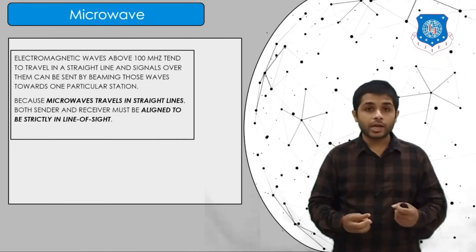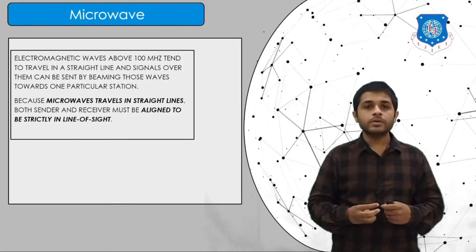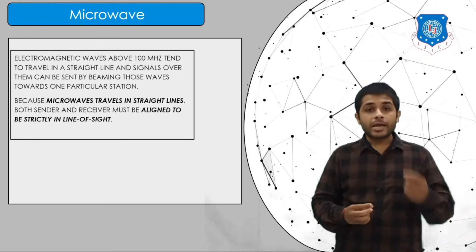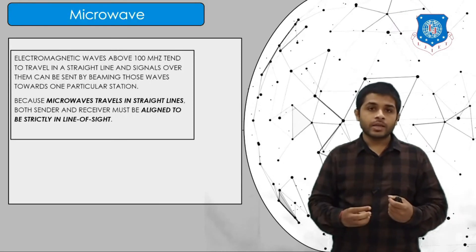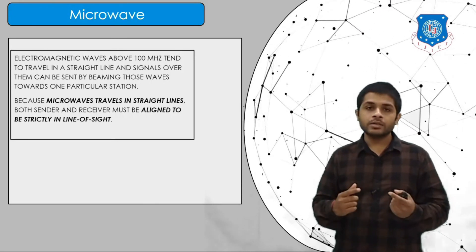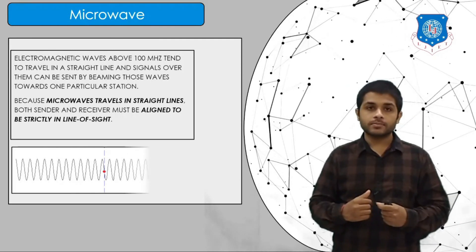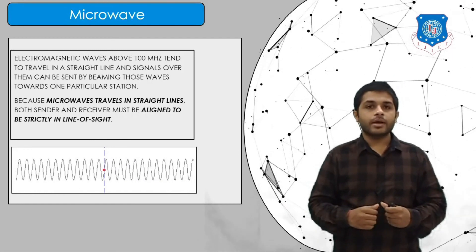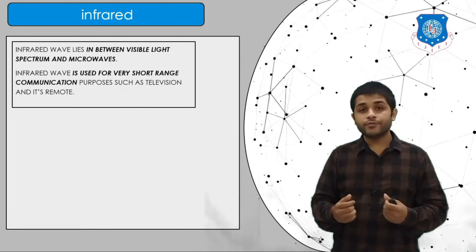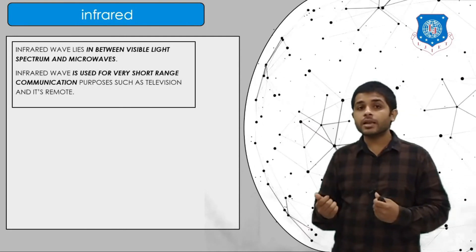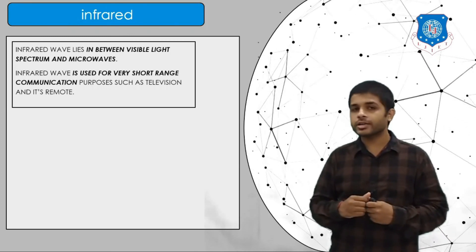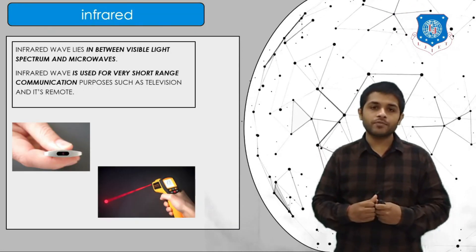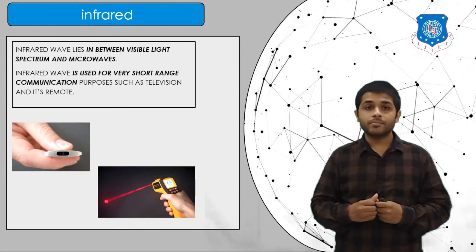Microwaves generally operate in the GHz frequency range and are used for satellite communication. Microwaves travel in a straight line, so the sender and receiver must be aligned for communication to take place. Infrared lies between the visible light spectrum and microwave, and is used for short-range communication — infrared receivers can be found in remote controls or surface temperature measuring devices.